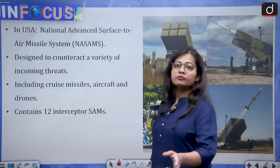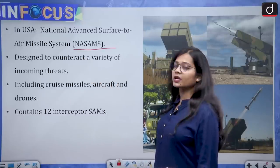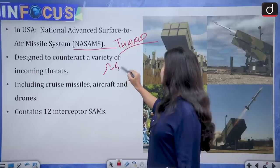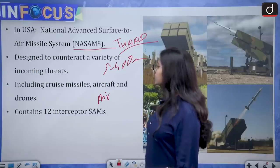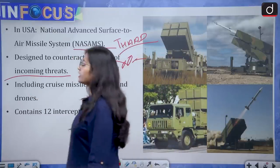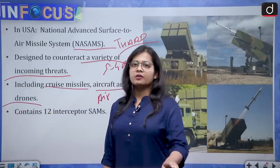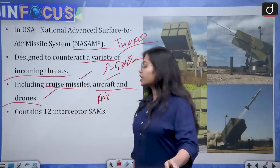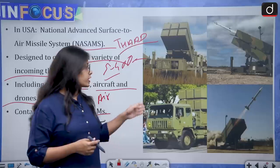The US has NASAMS — National Advanced Surface to Air Missile System. The US also has THAAD, Russia has S-400, India is taking S-400 from Russia, and Israel has the Iron Dome. NASAMS is designed to counteract a variety of incoming threats including cruise missiles, aircraft, and drones. It contains 12 interceptor SAMs. These are pictures of NASAMS, showing how the missile is launched from the launcher and the truck which has missiles kept on it.